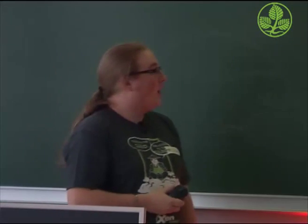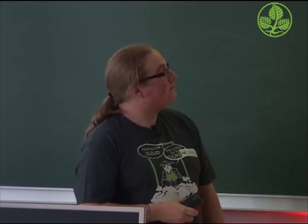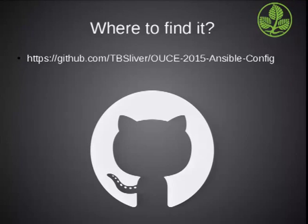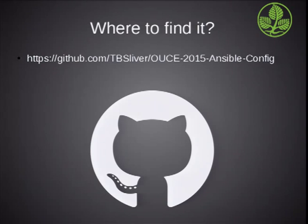Right then. So, where to find it? It's all on GitHub. The Ansible config is at tbsliver/OUCE-2015-Ansible-Config. It's a nice long name so you can't forget it. And the actual OpenNMS config files are there. That includes a branch called OpenNMS 16 Original, which is the files as they come from a default OpenNMS install. So, if you want to fork that and use that as a base for any of your configs, feel free. Or just, you know, download a tarball of it. I don't mind.